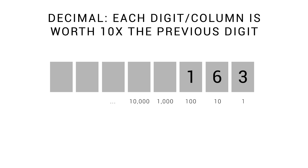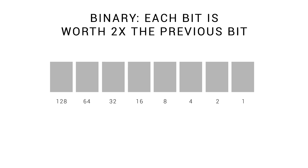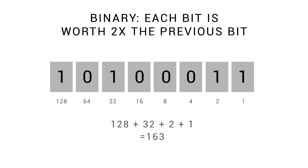If we form the number 163, there's 1 hundred, 6 tens, and 3 ones, and that adds up to 163. In binary, the value of each bit doubles the last, so the first column is worth 1, then 2, 4, 8, 16, 32, 64, and so on. To represent 163, we need a 1 in each column to make the values add up to this number. Our byte would therefore be 10100011, making 128 plus 32 plus 2 plus 1, which equals 163.